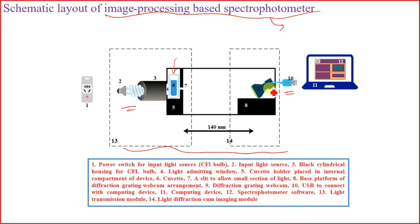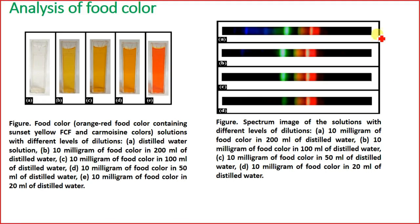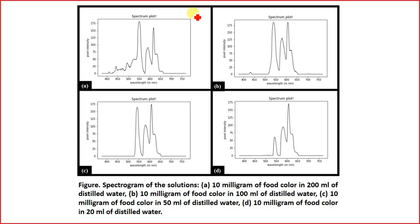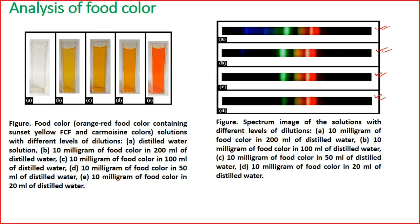Initially you measure the spectrum of the reference solvent and keep it recorded in memory. When measuring the test sample, you get its full spectrum, then subtract the reference values from the test values to obtain the corrected spectrum. If you are making your own device, you must first calibrate your sensor using a known light source, because a specific light source will give you a specific wavelength spectrum.